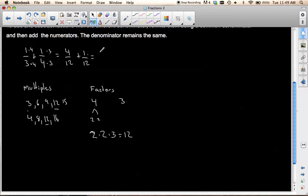If I add them together, I end up getting, well, 4 plus 3 is 7 over 12. That's all you need to do. It doesn't get any more complicated than that.